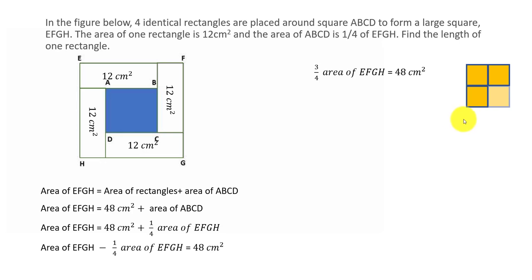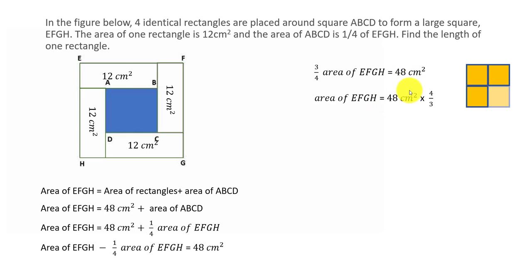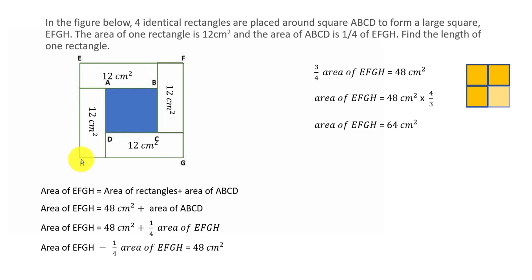Three parts equal 48 cm², and all parts are equal, so one part is 48 divided by 3. To get the total area, we multiply that one part by 4. So area of EFGH equals 48 times 4 over 3. That gives us 16 times 4, which is 64. So the area of EFGH is 64 cm².